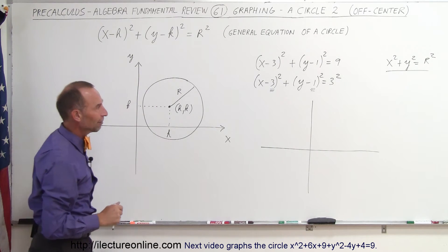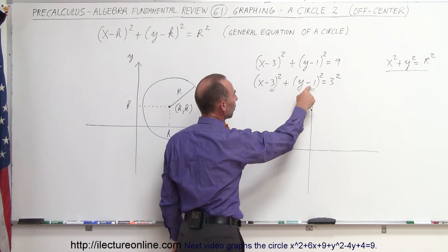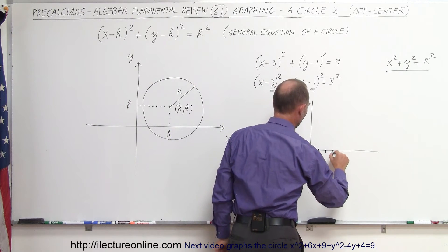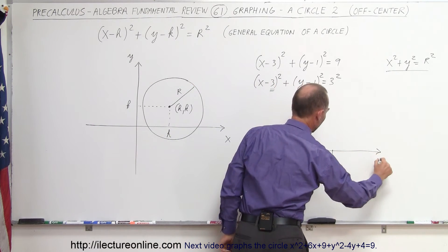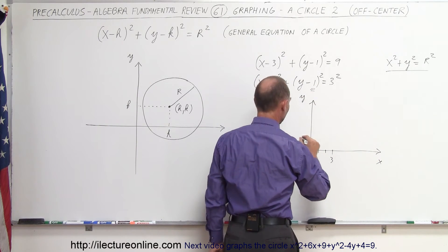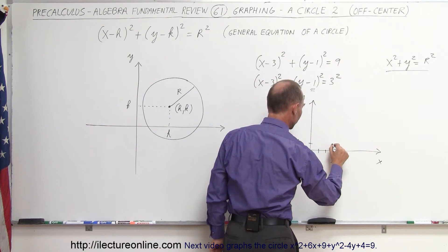Anyway, let's try to graph that. Again, the center is at x = 3, y = 1. So 1, 2, 3 for the x-axis. This is the y-axis and we're positive 1 for the y-axis. So the center of the circle is right there.